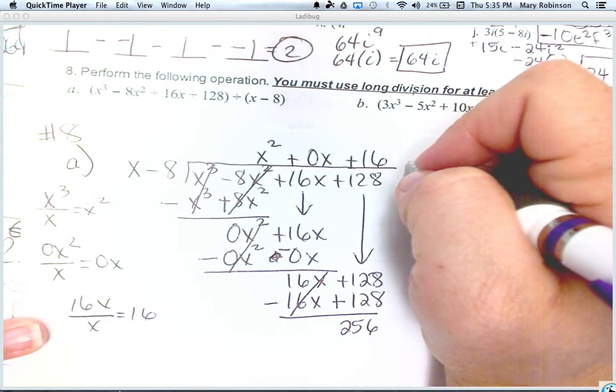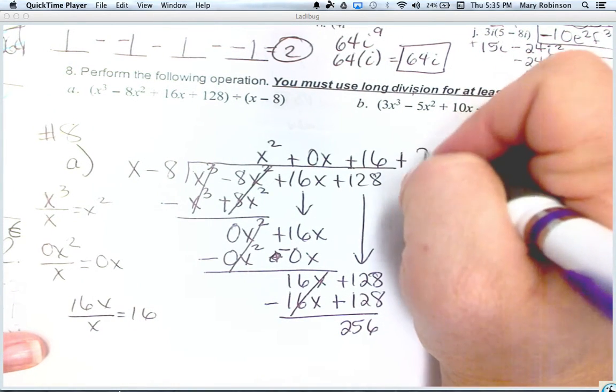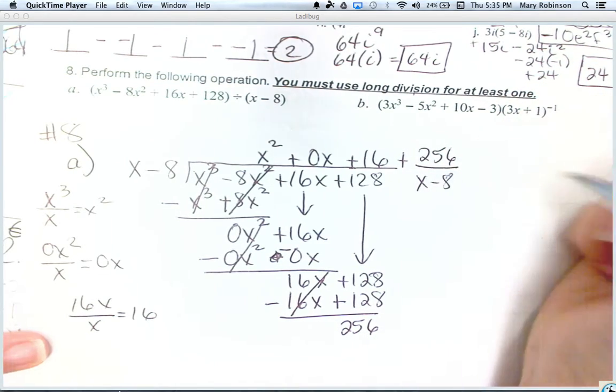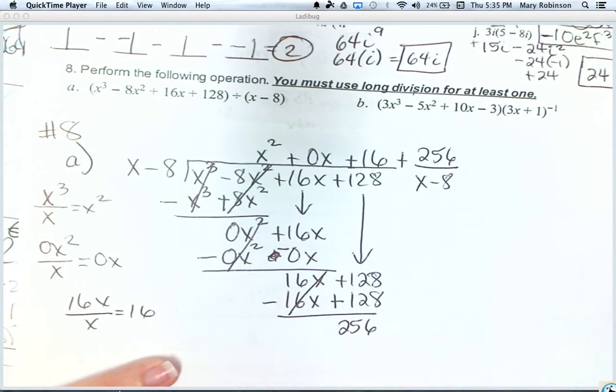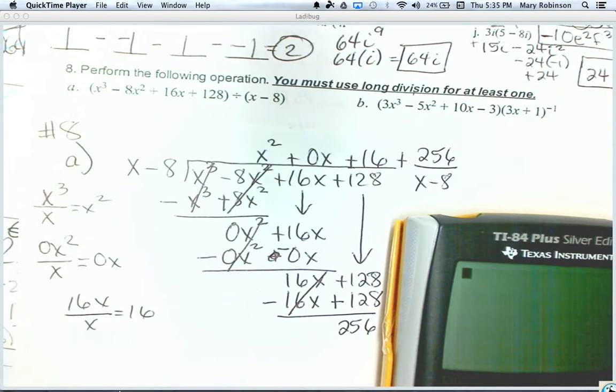And 128 and 128 make 256. So we get a remainder of positive 256 over x minus 8.